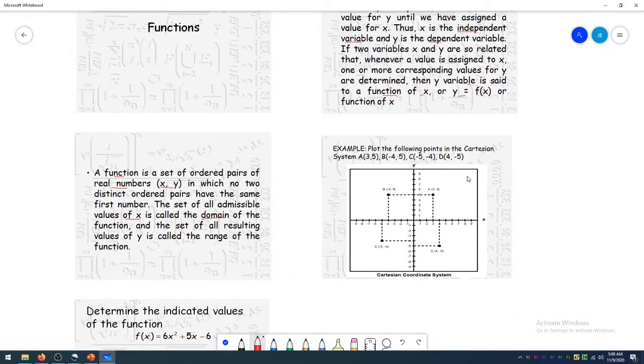So for example, for your activity, find the range and the domain of the given points in this Cartesian plane. We are going to plot the following points in the Cartesian system. We have (3, 5), (-4, 5), (-5, -4), and (4, -5). So how are we going to plot that?